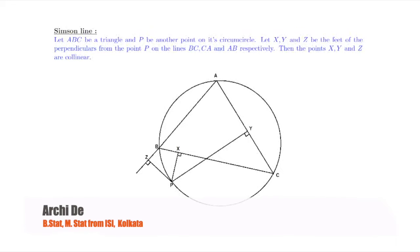The Simpson line is the line formed by X and Y. So these points X and Y are collinear. I will show that these points are collinear, and as I said, I will be using some basic results of concyclic points.